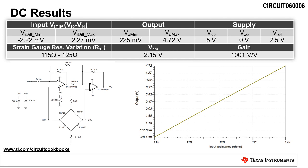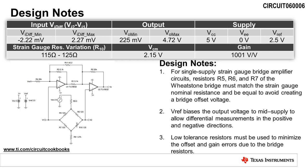Sweeping the resistance of R10, which represents the strain gauge, from 115 ohms to 125 ohms yields an output voltage of 228 millivolts to 4.72 volts. This verifies the functionality of the circuit. When designing a single supply strain gauge bridge amplifier circuit, there are a few design notes to be aware of.